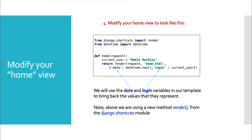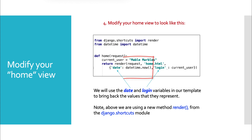Here we'll modify our home view just a bit. We have from django.shortcuts import render — something new we haven't seen before. And from datetime import datetime — this is just a Python file, so we can import any Python modules we care to use. So def home(request) — request will always be the first parameter. current_user is hard-coded to 'Mabel Marbles.' Then we have a return render instead of HttpResponse, using the shortcut render: send back the request, home.html is our template, and then a context dictionary with the key 'date' for the value datetime.now, and the key 'login' for the value current_user. These variables get pulled into our template to bring back their values, which are datetime.now and current_user respectively.